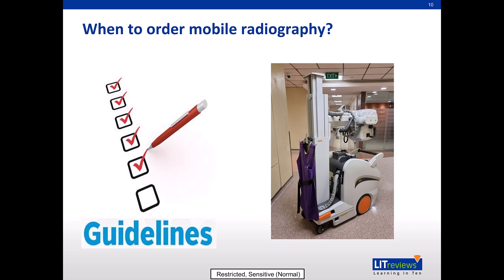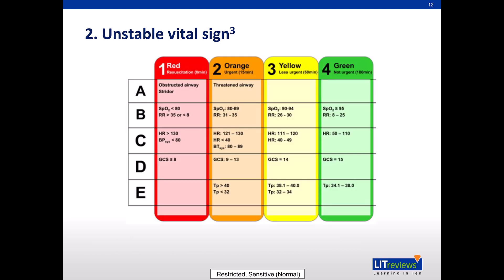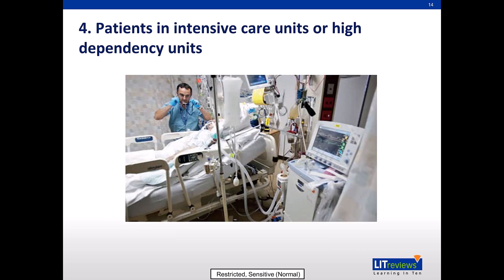Fortunately, there are guidelines available to support the ordering of mobile radiography. Firstly, mobile radiography is appropriate for patients who fall under the Dangerously Ill List, or DIL, as a patient's condition is not ideal to be transferred for x-ray in the radiology department. Secondly, mobile radiography is appropriate for patients with unstable vital signs. In addition, it is also recommended for patients under isolation, such as COVID-positive patients. Patients in ICUs or high-dependency units are also recommended for mobile radiography.